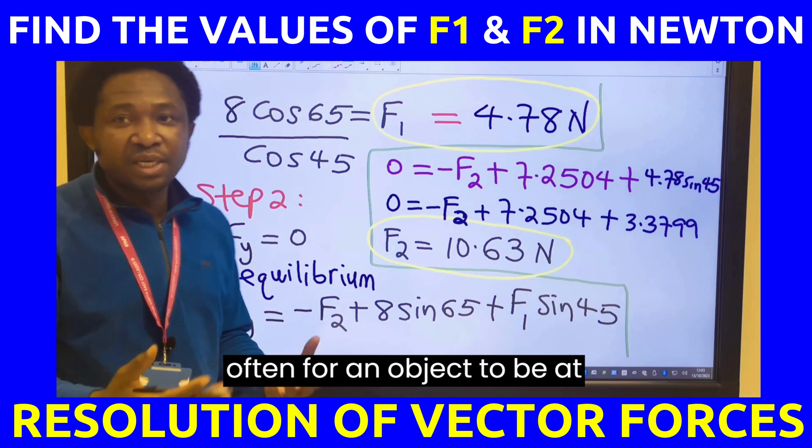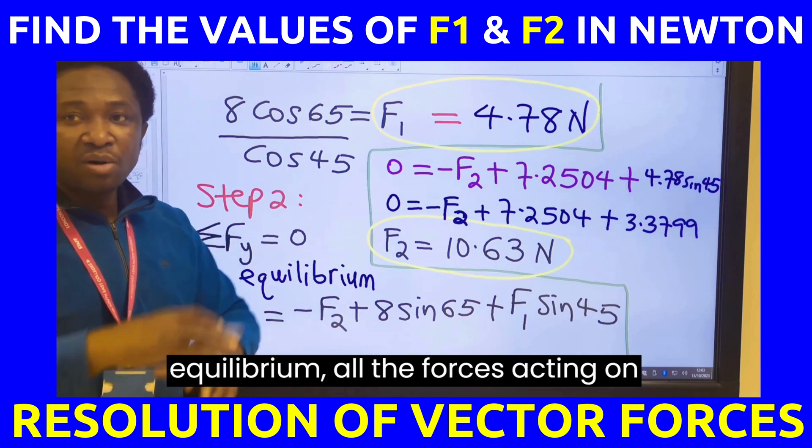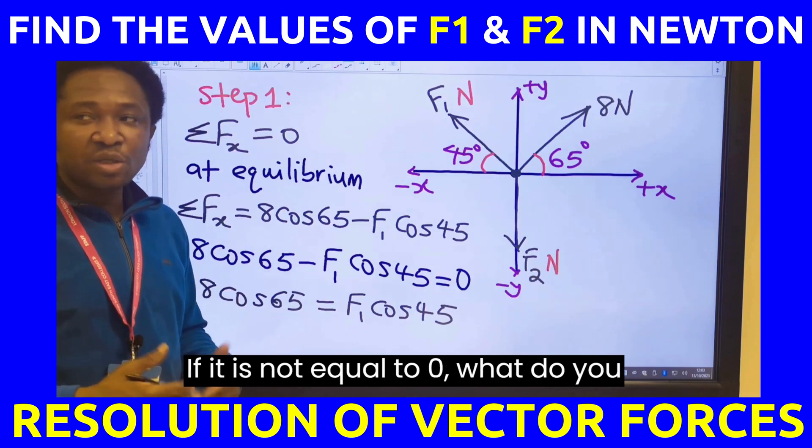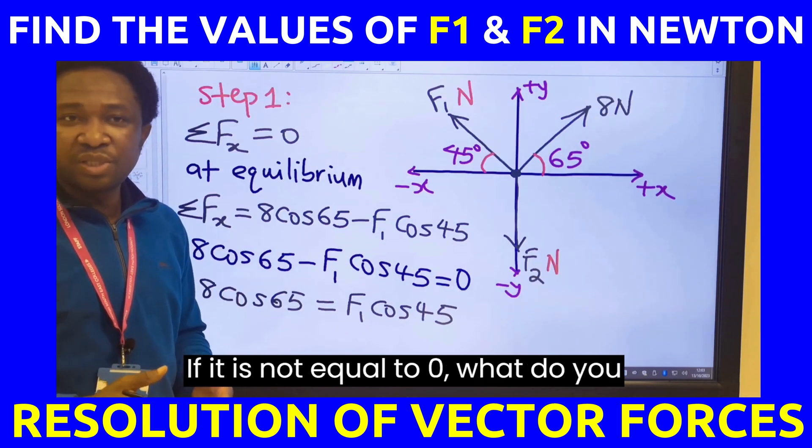Often for an object to be at equilibrium, all the forces acting on that object must be equal to 0. If it is not equal to 0, what do you think will happen?